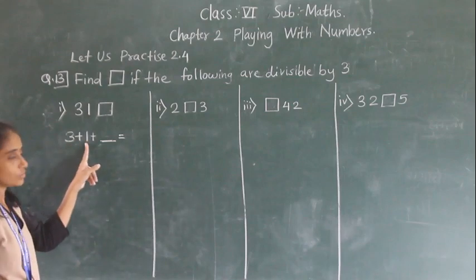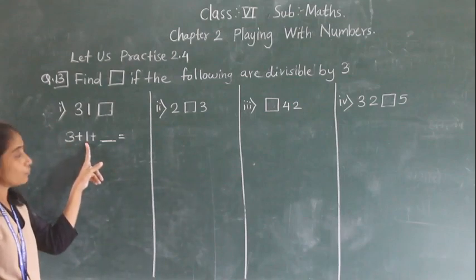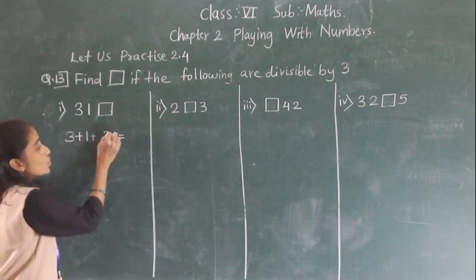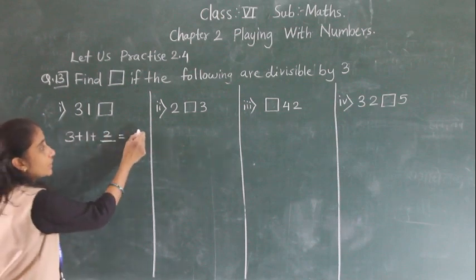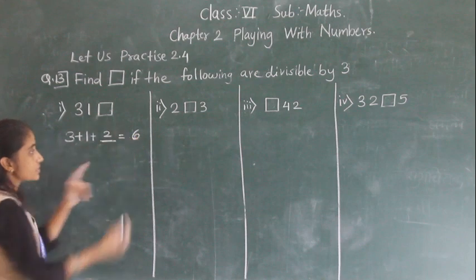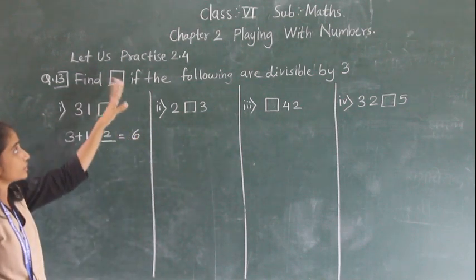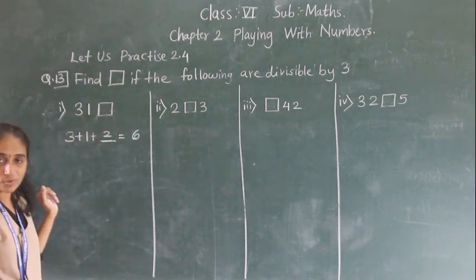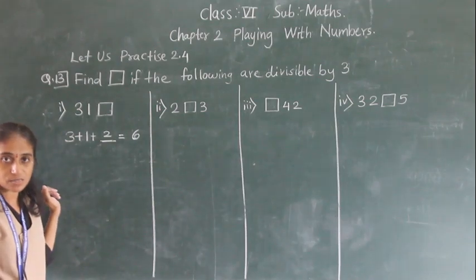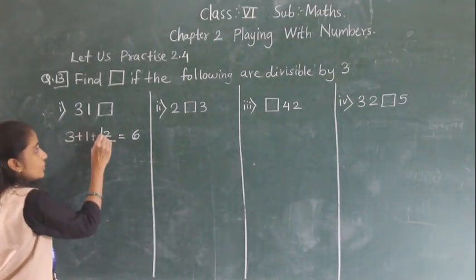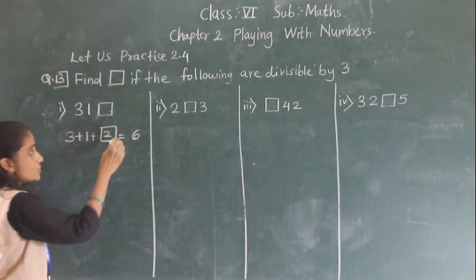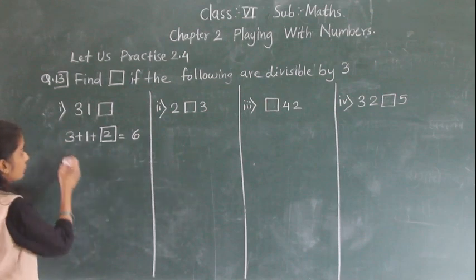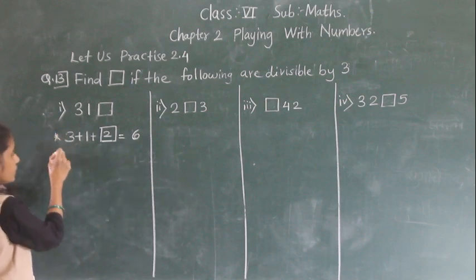3 plus 1 is 4. 4 plus 2 is 6. If we get the sum of 6, is it divisible by 3? Yes — 3 times 2 equals 6. So, 2 can go in the square. We can still get some other numbers, let's check. This is the first one.